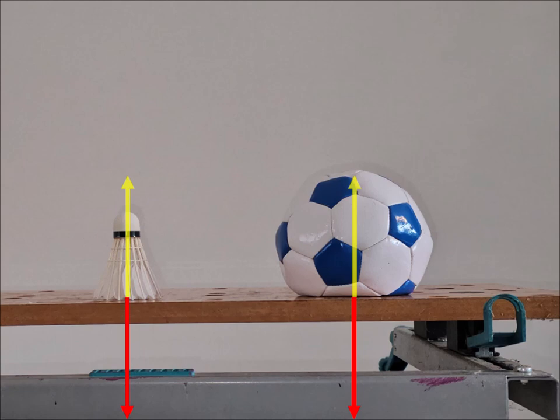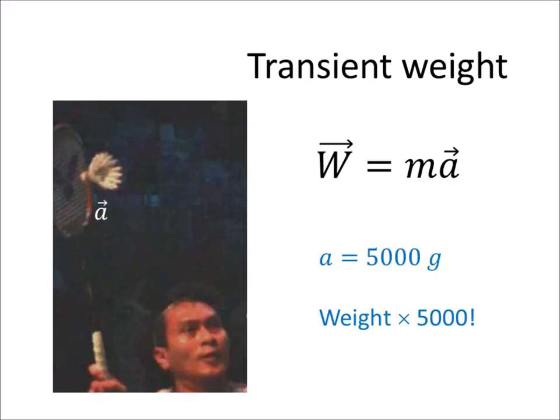However, the objects may deform under their own weight, as is the case of this deflated ball. During impact, and because of the huge acceleration, the weight of the shuttlecock is multiplied by 5000, and it will deform under its own weight. In other words, during impact with the racket, this 5-gram shuttlecock weighs as much as this 25 kg wheel case.